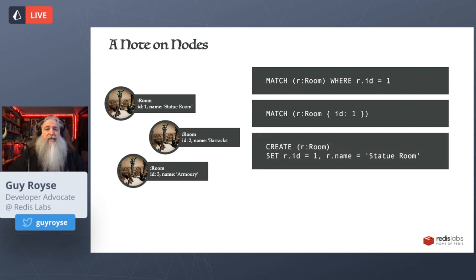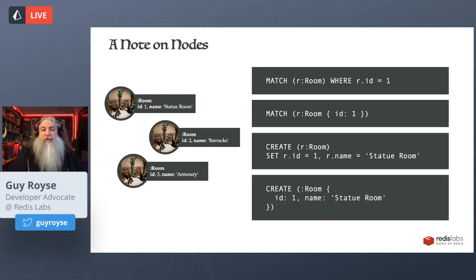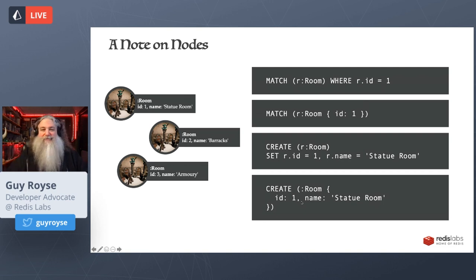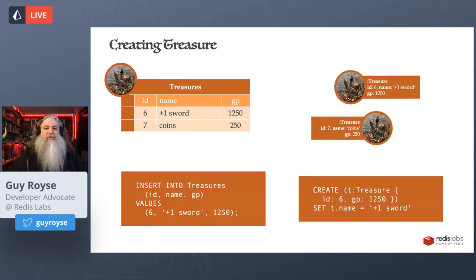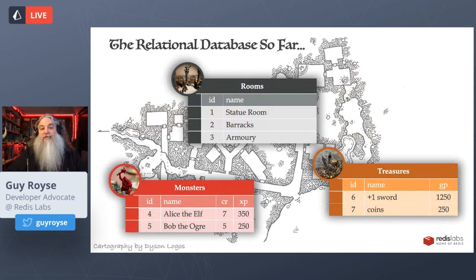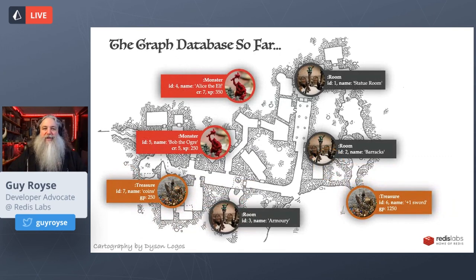Deletion follows the same pattern — we MATCH a particular room and then say DELETE. So instead of returning or modifying it, we delete it. Also worth noting: you can use a match with curly braces for properties in a JavaScript-like syntax — curly brace, property-value pairs, comma-separated — and it ANDs them all together. This works with creating as well; you don't have to use SET, you can create a node with properties already on it. So far our relational database has three tables with some rows; our graph database has a bunch of nodes floating out in space.